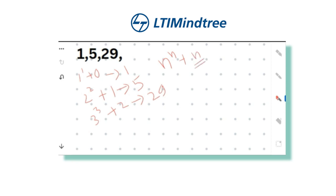So the pattern is n^n plus (n-1). The question mark corresponds to 4 to the power 4 plus 3. 4 to the power 4 is 256, plus 3 is 259. So the missing number is 259. If your answer is also 259, please write it in the comment section and I'll give you a heart.